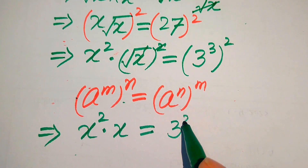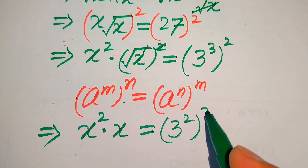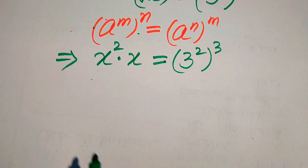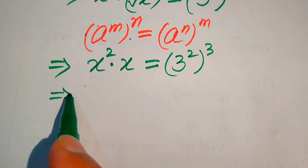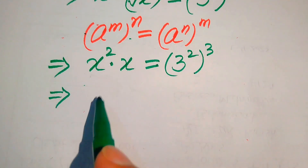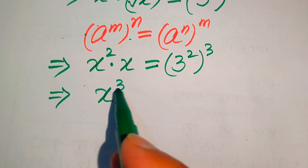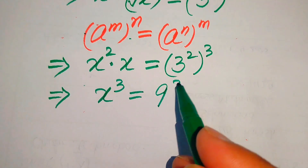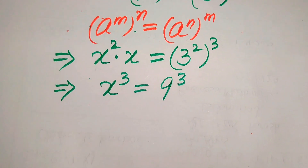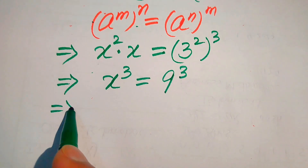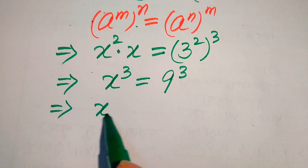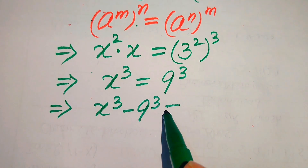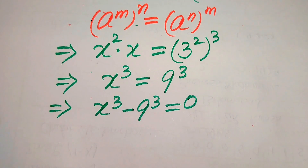Further in the next step we multiply these two terms and it becomes a cubic equation. So x squared times x becomes x cubed. We know that 3 squared becomes 9, so it becomes 9 cubed. Now we move this 9 cubed to the left hand side and it will become x cubed minus 9 cubed is equals to 0.